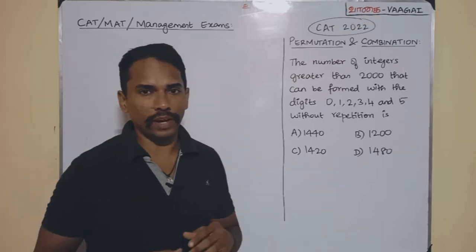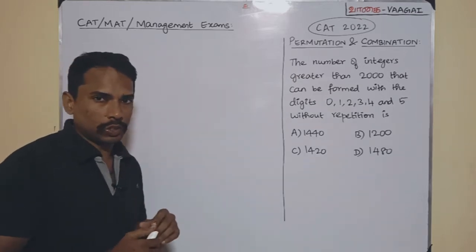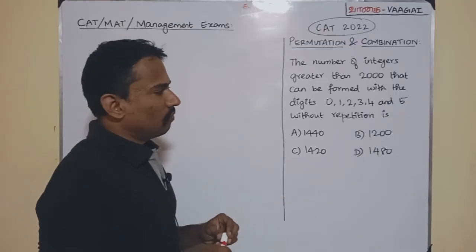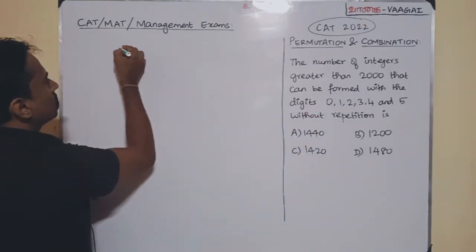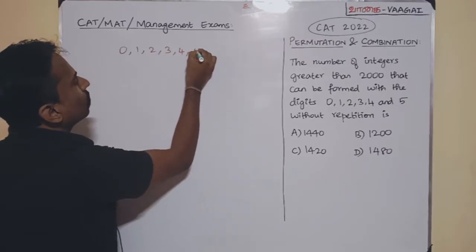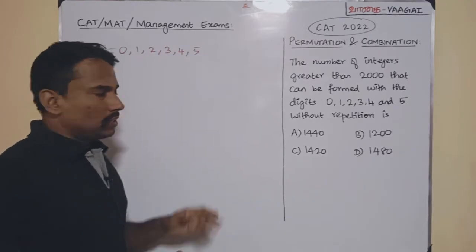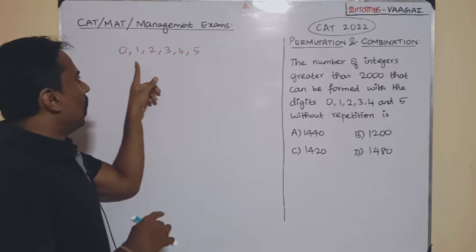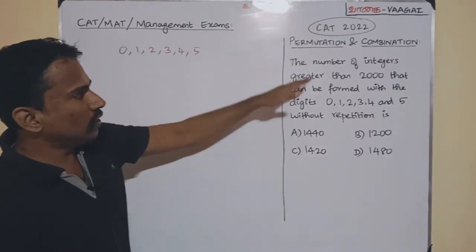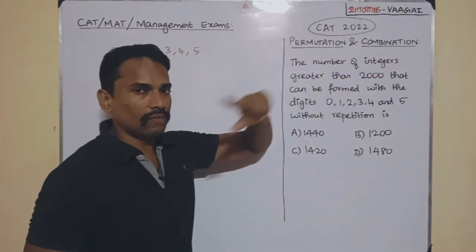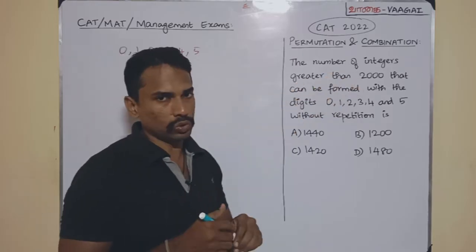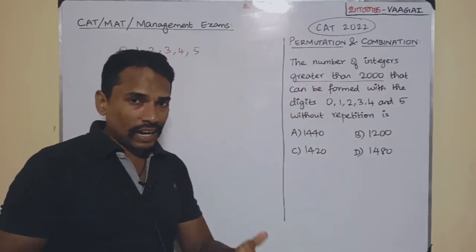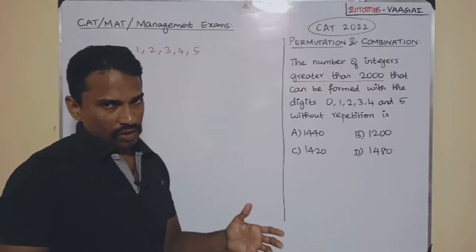The question seems not too complicated. First, we have the digits 0, 1, 2, 3, 4, and 5 — six digits total. Note carefully there is one zero and five non-zero digits. We need to form integers greater than 2000, which is an important condition.